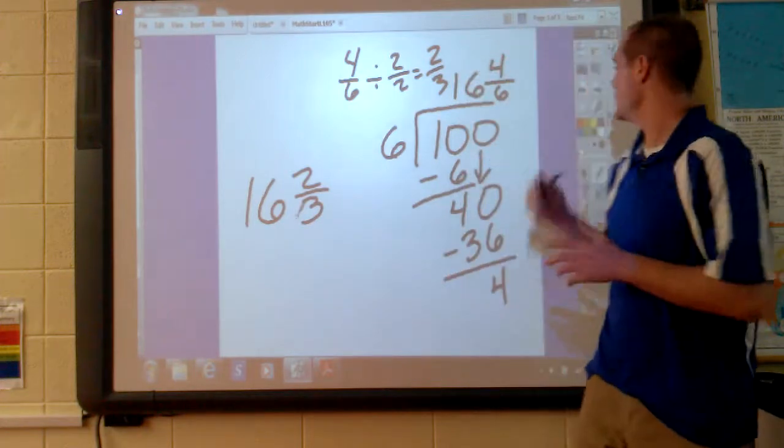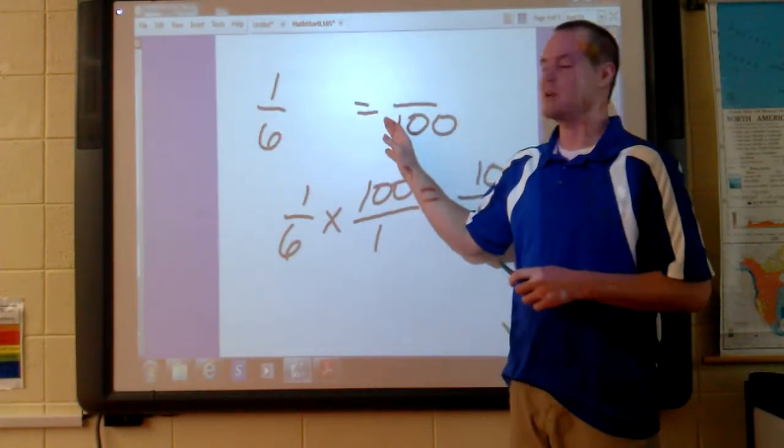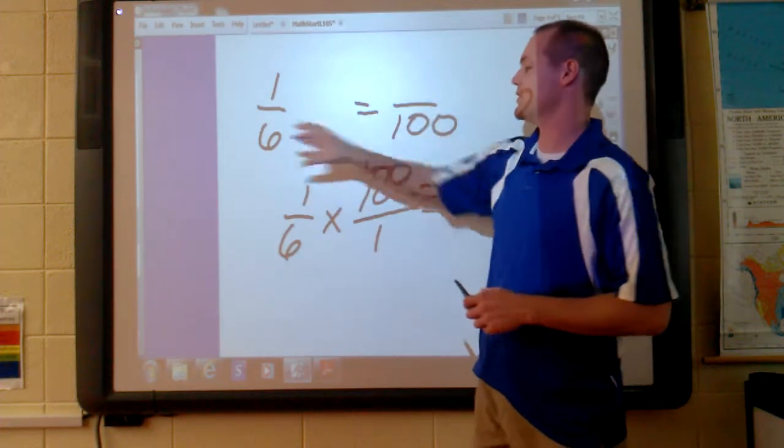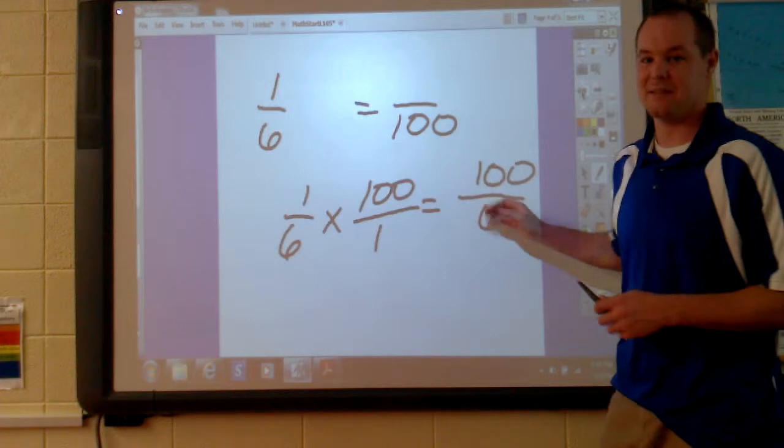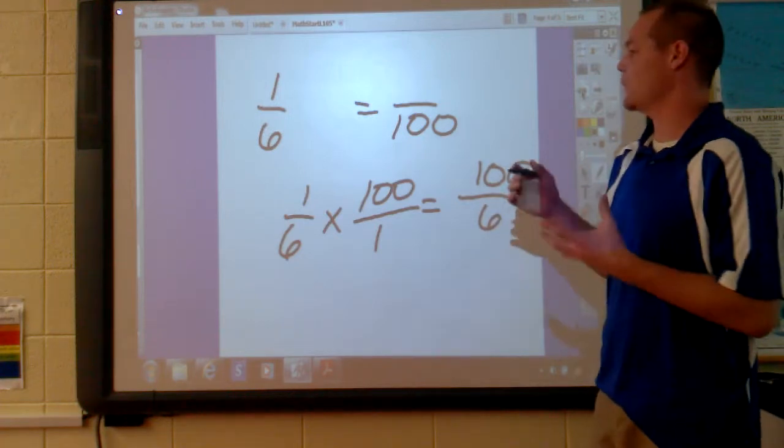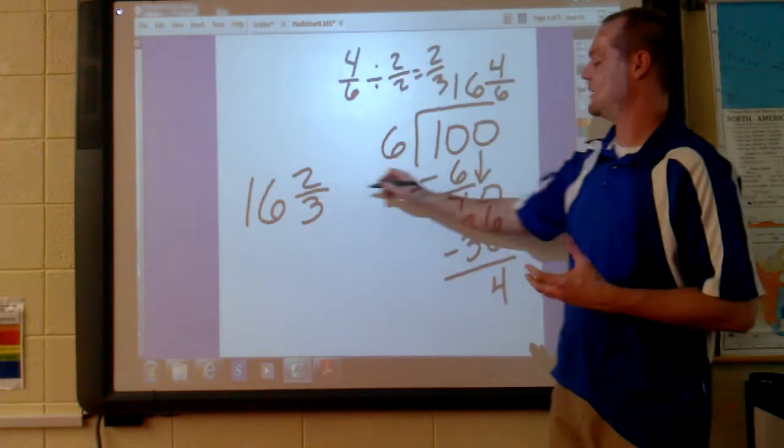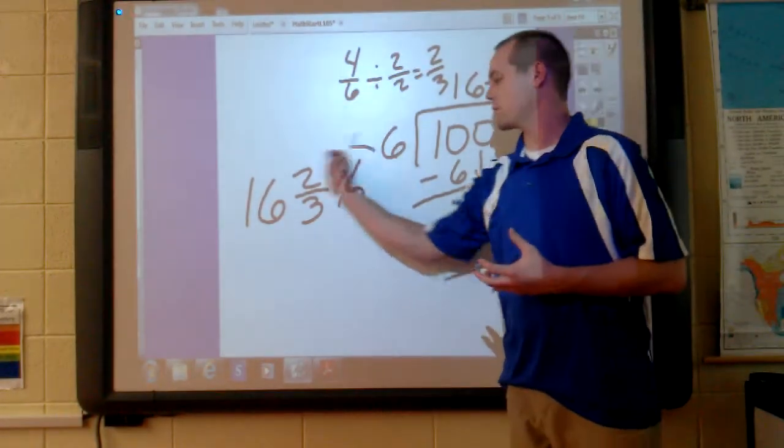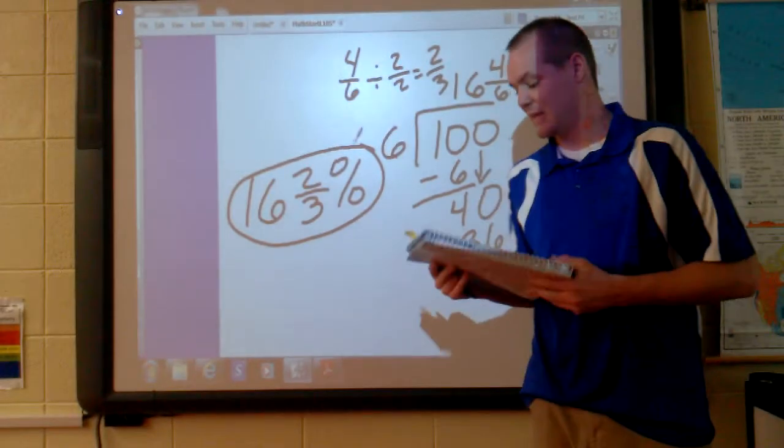When we needed to convert 1/6 to a percentage, first we have to split 100 into 6 equal parts. We did that here by taking 100 divided by 6. After we do that, we know that 1/6 as a percent is 16 and 2/3. That gives us our answer.